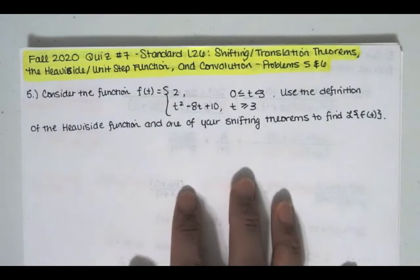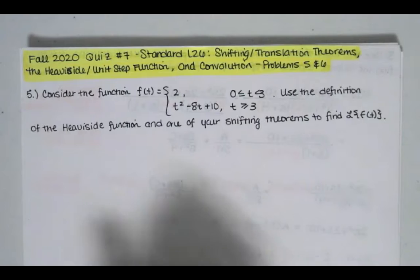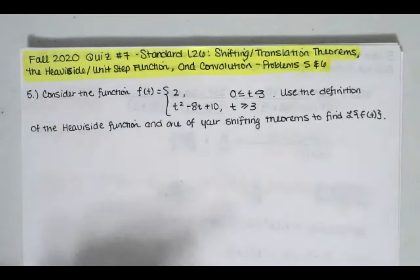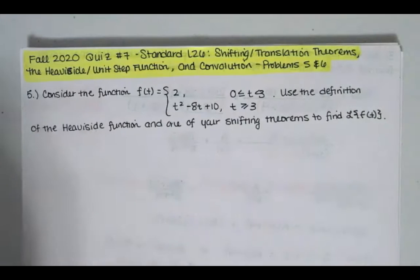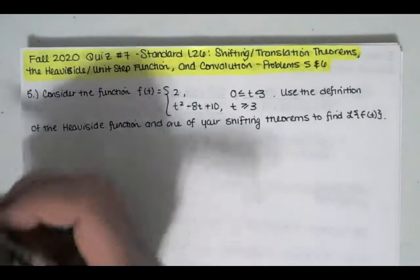In problem five, we're given a piecewise function and we're asked to use the definition of the Heaviside function and one of our shifting theorems to find the Laplace transform of f of t. The first thing we need to do is write f in terms of the Heaviside function so that we can use a shifting theorem to compute its Laplace transform.